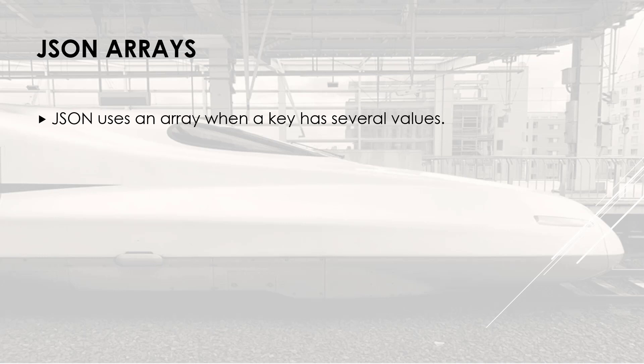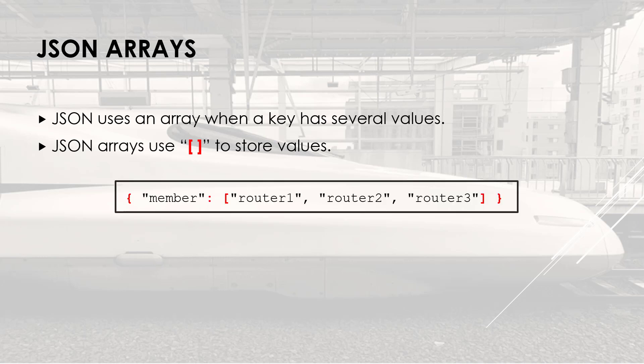A key can have several values, and when it does, we use an array structure. We use a square bracket to store the different values. Let's have a look with this object — the key is member, and we have different values: router1, router2, and router3, stored within the square bracket.